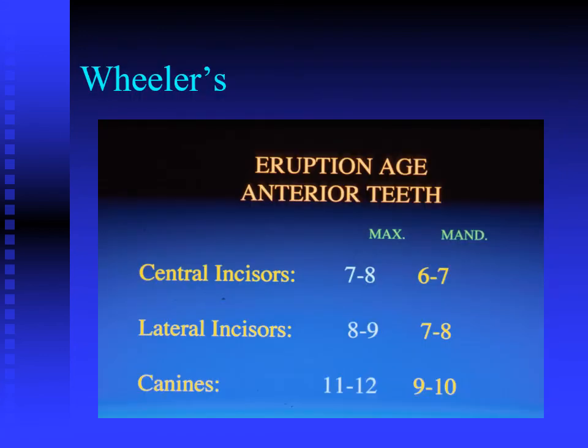Along with knowing the basic contours of each permanent and later primary tooth, be aware that we will also require you to memorize eruption ages and sequences. Maxillary central incisors erupt around age 7–8, mandibular central incisors 6–7, lateral incisors 8–9 maxillary and 7–8 mandibular, and canines 11–12 maxillary and 9–10 mandibular.